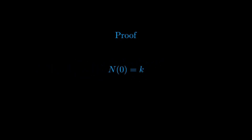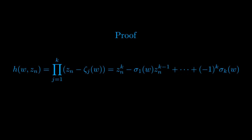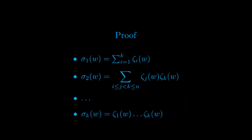By our supposition about f, we trivially have N(0) = k, since f is regular of order k. Furthermore, by continuity, N(w) = k for all w with |w| ≤ ε. Let us call ζ_1, …, ζ_k the zeros of f, which are functions of w. We set h to be the product (z_n − ζ_1)···(z_n − ζ_k), which by expanding can be written as z_n^k − σ_1(w)·z_n^{k−1} + ··· + (−1)^k·σ_k(w), where the σ_i's are elementary symmetric polynomials in the roots of f.